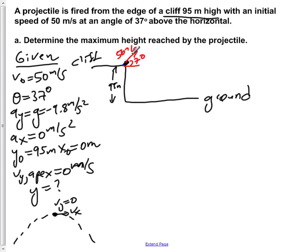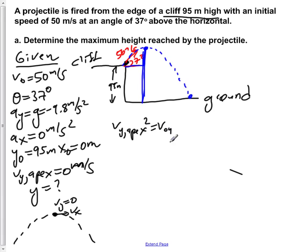The projectile follows a trajectory until it hits the ground below. We want to know the highest point it reaches — the height above ground level. We use the kinematic equation: Vy_apex² = Vy² + 2·Ay·Δy. We know Vy_apex equals 0, we know Vy, and we know Ay, so the only unknown is Δy.